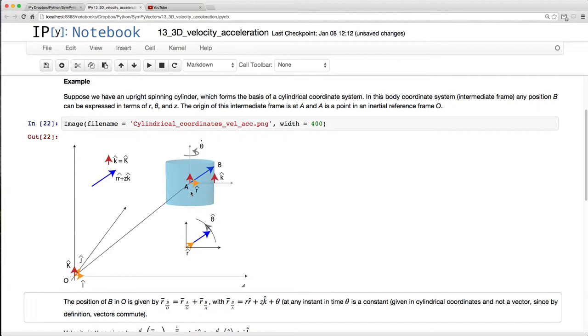And in my intermediate frame, I have this R hat direction, again in a K hat direction. And if I were to look from the top, some angle theta. So, that is my body coordinate system.